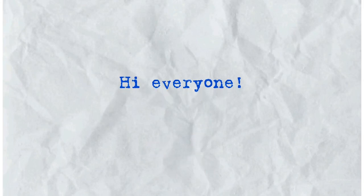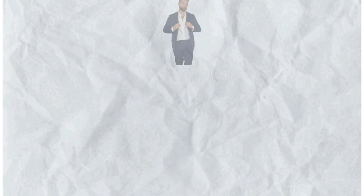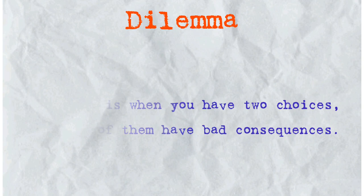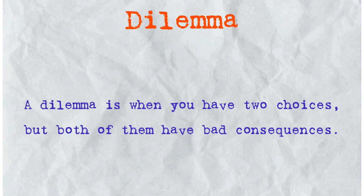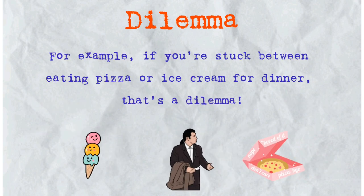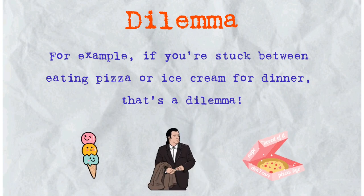Hi everyone. Today I'm going to teach you five English words in detail. Let's get started. The first word is dilemma. A dilemma is when you have two choices, but both of them have bad consequences. For example, if you're stuck between eating pizza or ice cream for dinner, that's a dilemma.